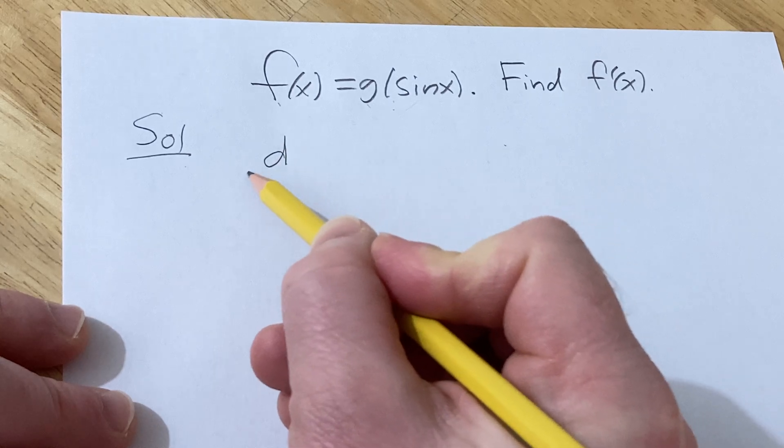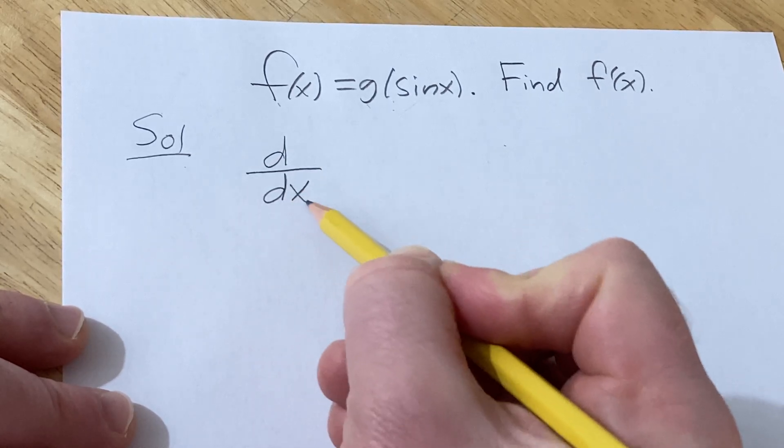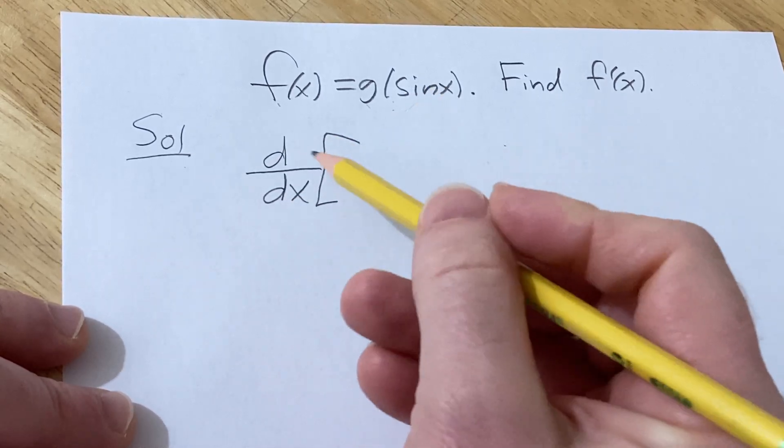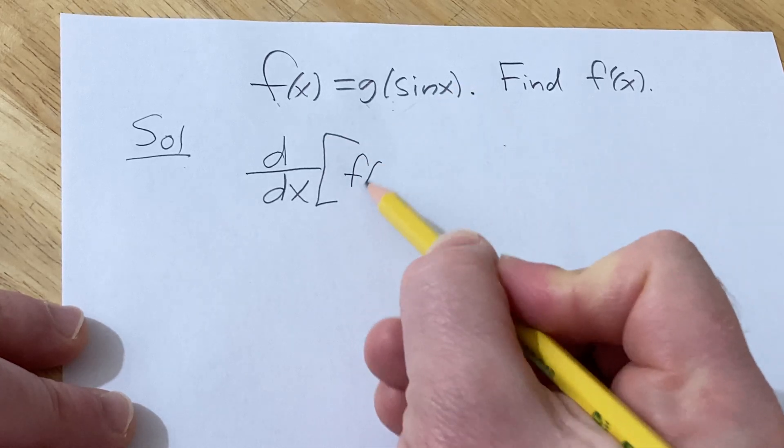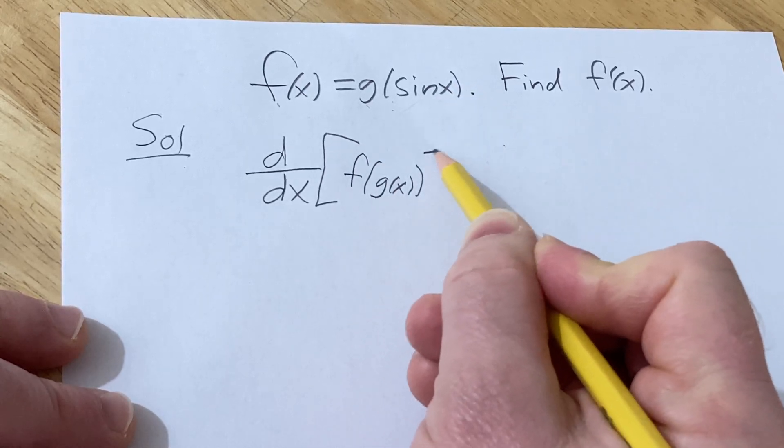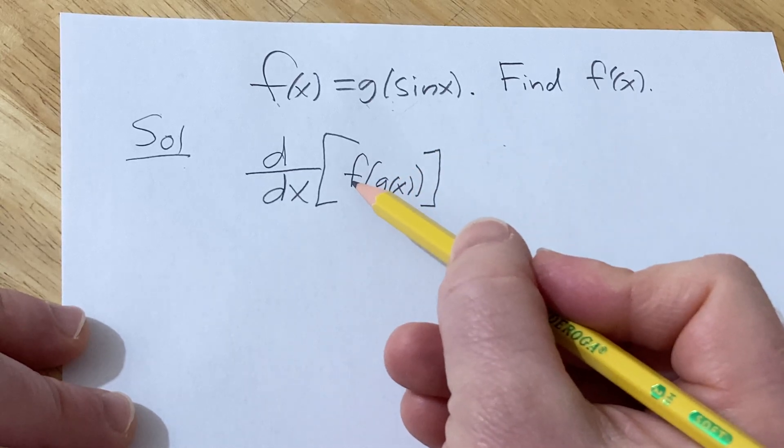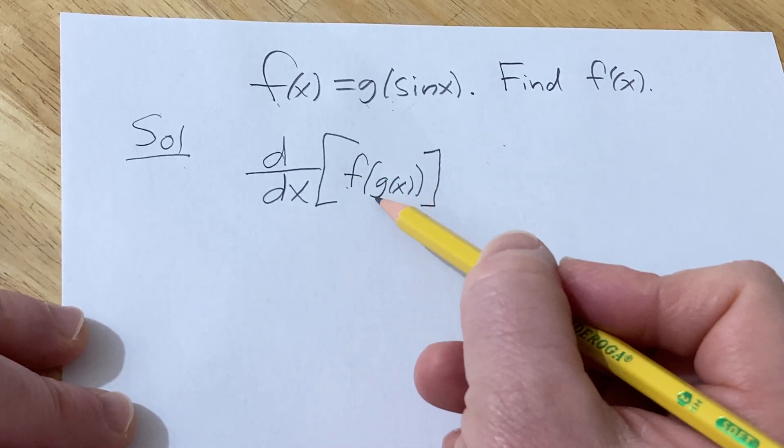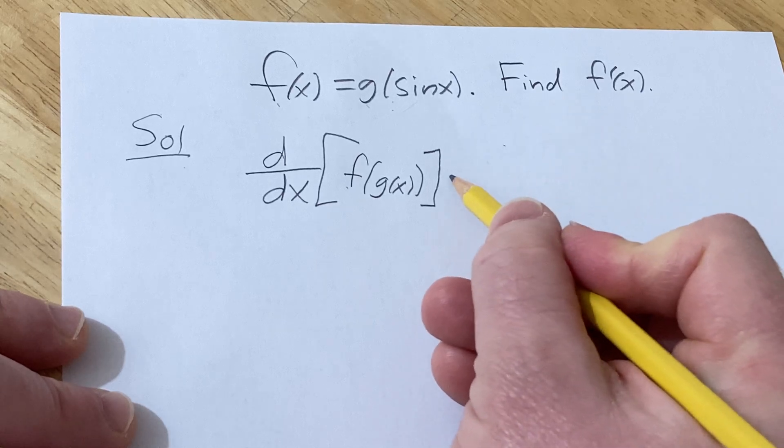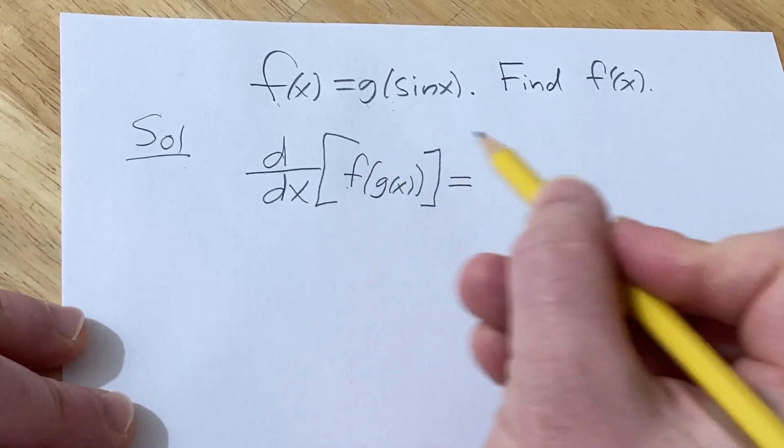The chain rule says if you take the derivative with respect to x of the composition f(g(x)), you want to think of f as your outside function and g as your inside function. So basically you take the derivative of the outside